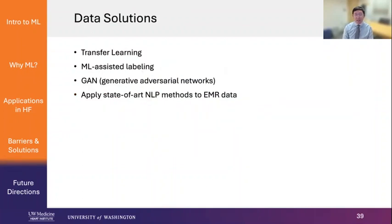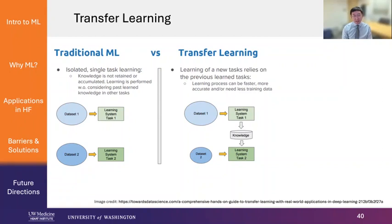How do we solve those? There are actually a number of new solutions — for example, transfer learning, machine learning-assisted labeling, and generative adversarial networks. We can also apply state-of-the-art natural language processing methods to EMR data. Transfer learning means that you apply an algorithm on one dataset, learn something, come up with a model, and then use the knowledge gained from that model and apply it to a smaller but related dataset. For example, if you're trying to use discharge summaries to predict heart failure readmissions, you can first train a model on a very large sample of generic discharge summaries that don't even have to be labeled.